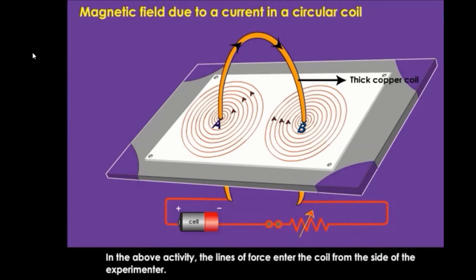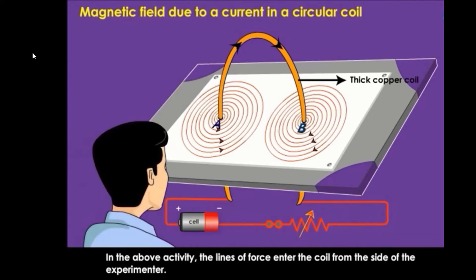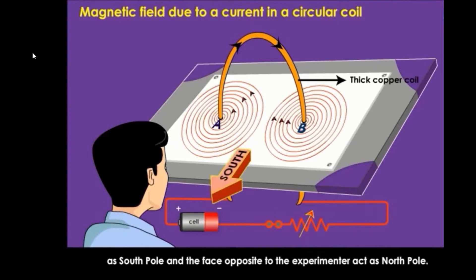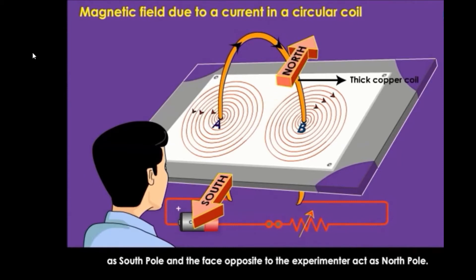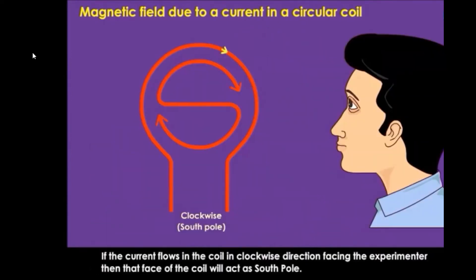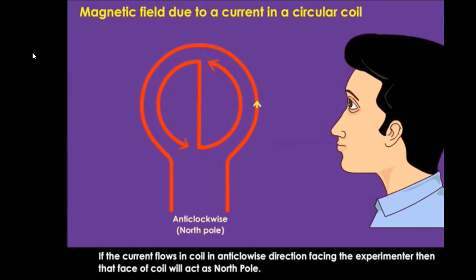In the above activity, the lines of force enter the coil from the side of the experimenter. So we can say that the face of the coil towards the experimenter acts as a south pole, and the face opposite to the experimenter acts as a north pole. Relating the above observation to the flow of current in the coil: if the current flows in the coil in anti-clockwise direction facing the experimenter, then the face of the coil will act as a south pole.